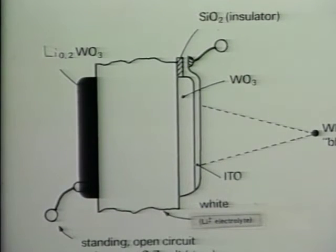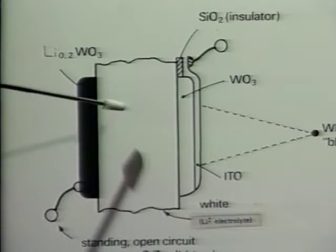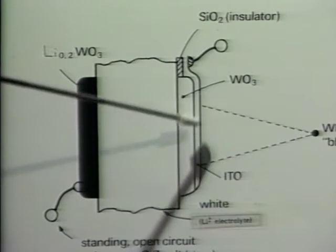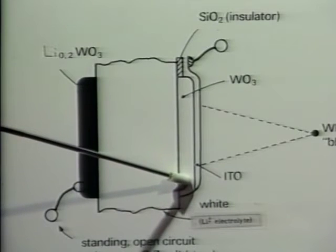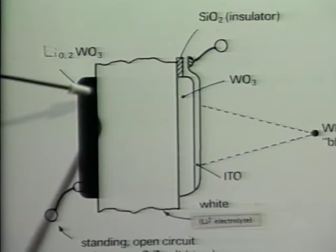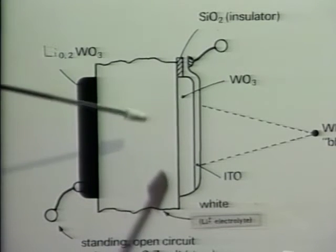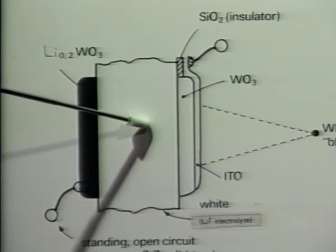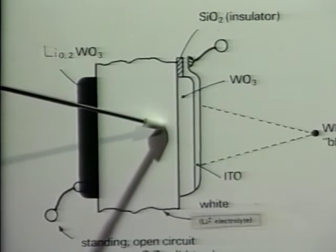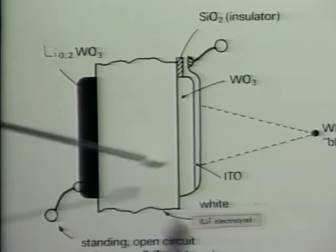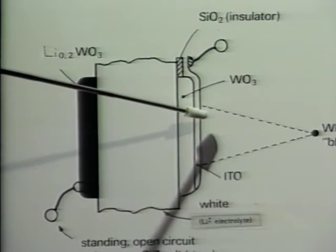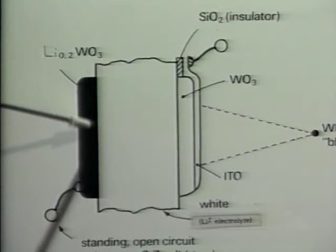The means for reversibly inserting or removing lithium atoms from the film of tungsten trioxide is the solid-state electrochemical cell, illustrated here. It consists of two electrodes: a front colorless tungsten trioxide electrode, and a rear dark blue lithium tungsten bronze electrode, and a solid-state electrolyte which conducts electricity by the motion of lithium ions and is white in color, in order to isolate the front electrode from the rear electrode.